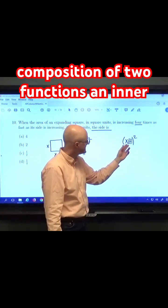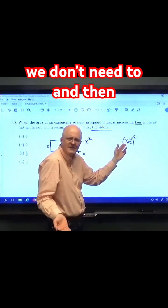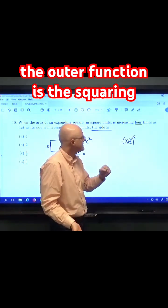We've got a composition of two functions, an inner function x of t, which we don't know the formula for, but we don't need to. And then the outer function is the squaring function.